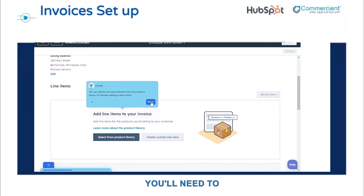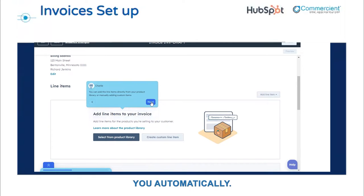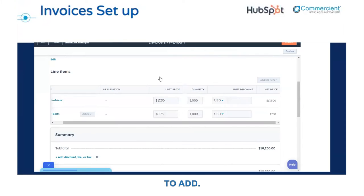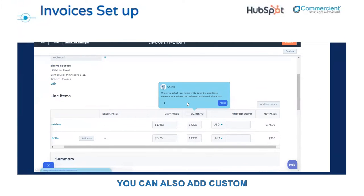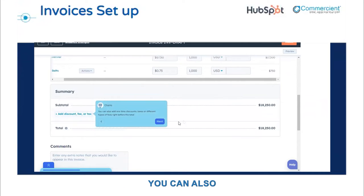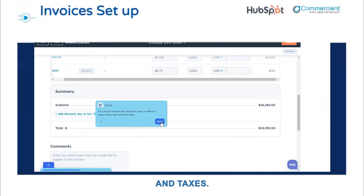In starting from scratch, you'll need to add products. If you are creating an invoice from a quote, this step may be completed for you automatically. To add products, click here and scroll through the product list to find the appropriate products. You can also add custom line items if applicable. Next, you need to set the quantity of each product, and you have the option to discount by line item. If we scroll down, you can also add additional line items to the invoice like discounts, fees, and taxes.